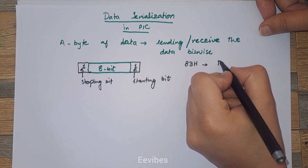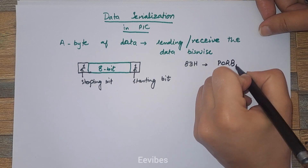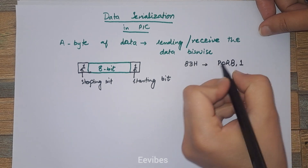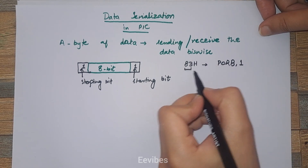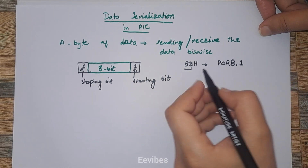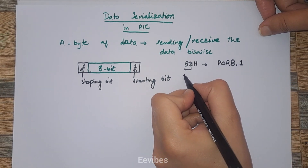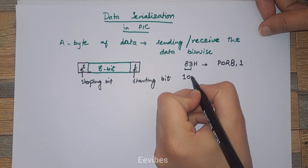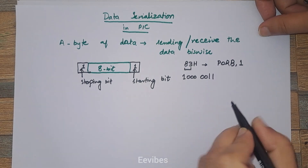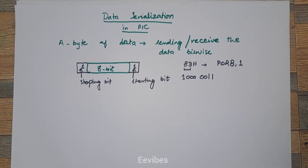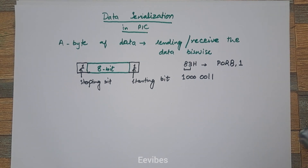The problem at hand is to send the value 83 hex at the first pin of Port B. We have to send this 83 hex value to the first pin of Port B bitwise. If you write down the binary equivalent of 83 hex, it becomes 1000 0011.